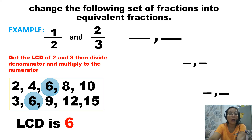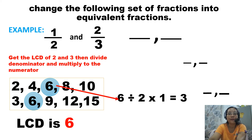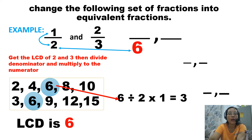Since we have 6, our LCD — least common denominator — is 6. Let's place 6 as our common denominator. Now, 6 divided by 2 equals 3. Then, multiply that by the numerator: 3 times 1 equals 3. So, 3 is your numerator. You have 3 over 6 as the equivalent fraction for 1 half.